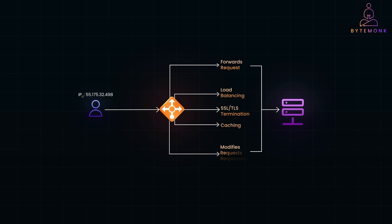It can also modify requests and responses, adjusting headers, URLs, or request bodies to ensure seamless compatibility with backend services. This combination of features makes reverse proxies essential in modern web architecture.